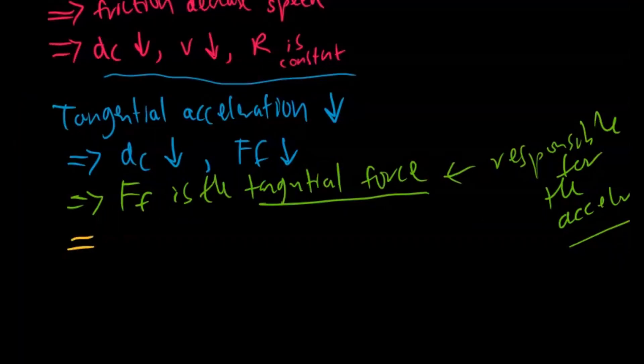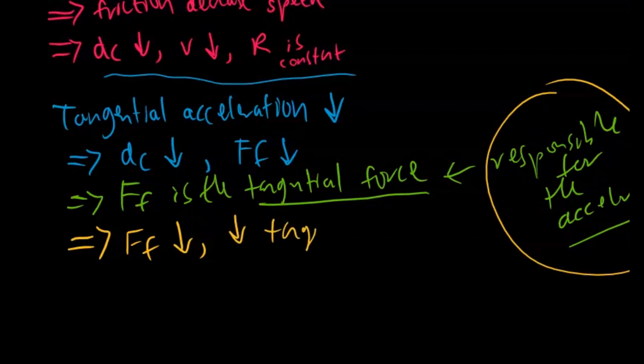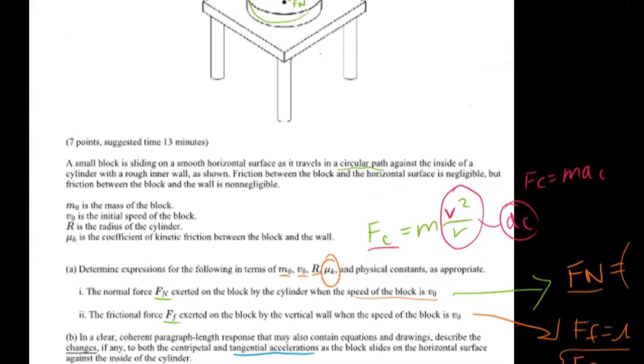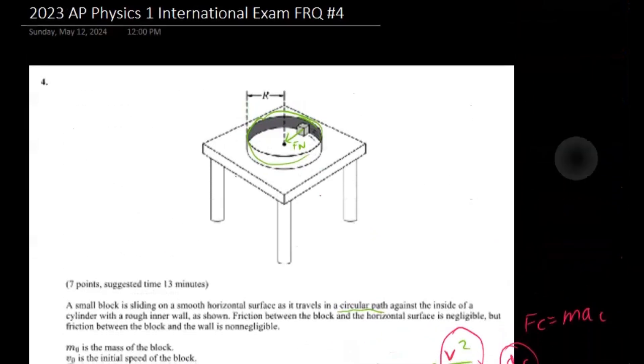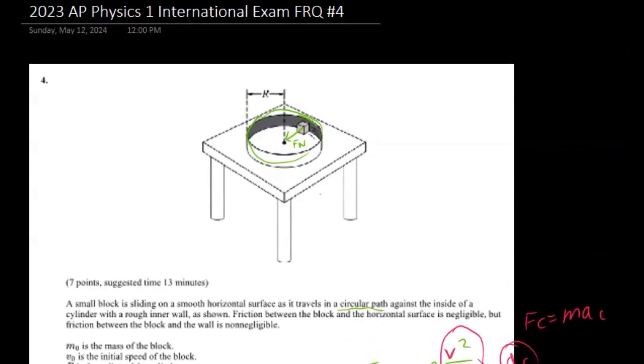All right. So now we can write just force of friction will be decreasing. And so because it is the force responsible for that deacceleration, we can write it will also lead to a decrease in tangential acceleration. All right. So that does it for this FRQ. If you guys learned something, make sure you subscribe. And thank you for watching.